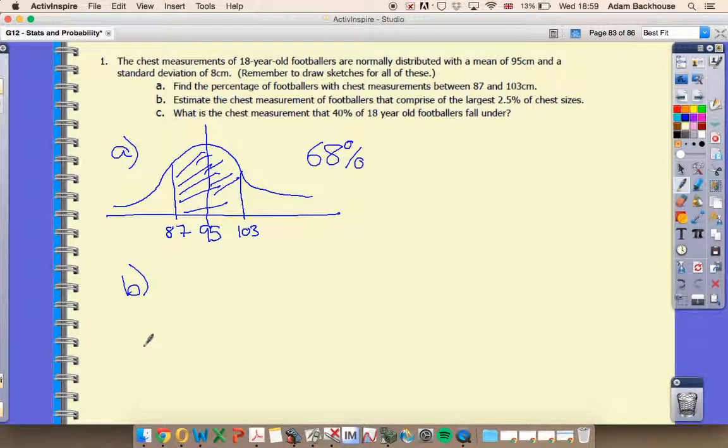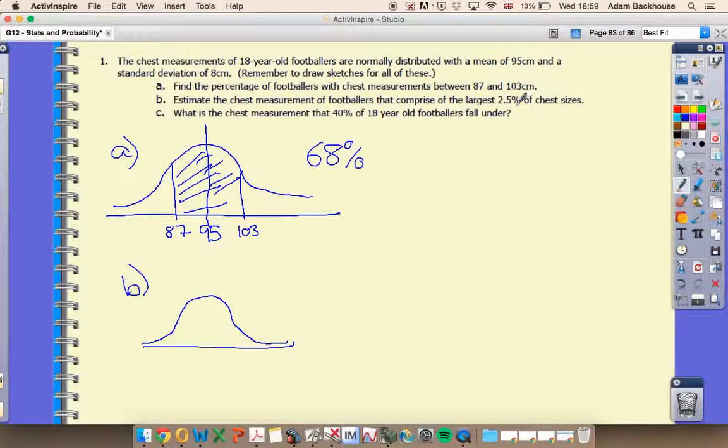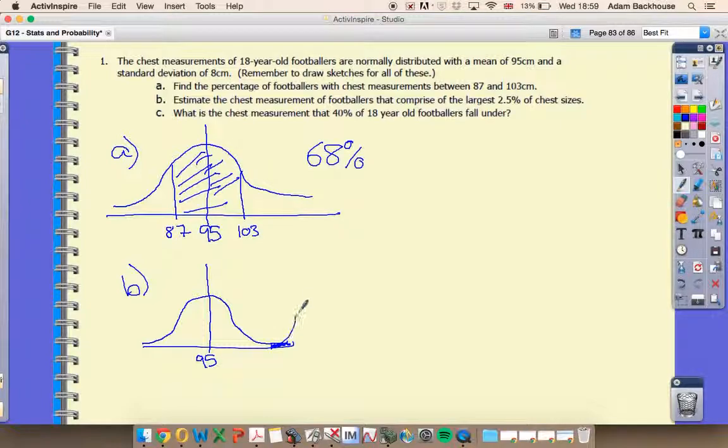Looking at part B, we have a slightly different situation because this time we've been given a probability and we're asked to find the measurement. We're looking at the largest 2.5%, so I'm going to put this right on the end here. That is my 2.5%.